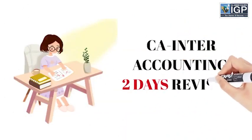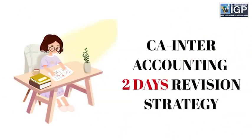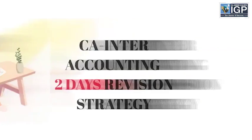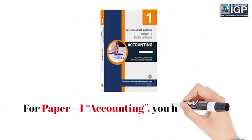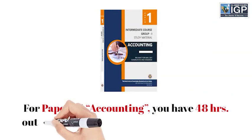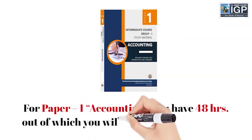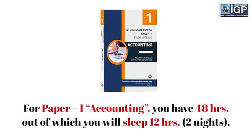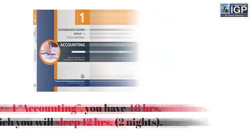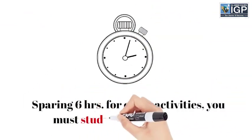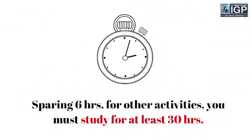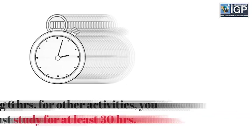CA Inter Accounting: two days revision strategy for Paper 1 Accounting. You have 48 hours, out of which you will sleep 12 hours over two nights and spare six hours for other activities, so you must study for at least 30 hours.